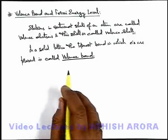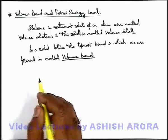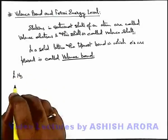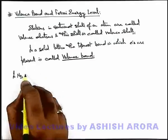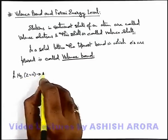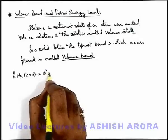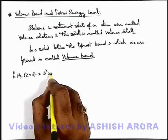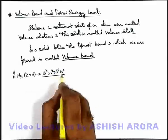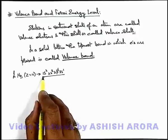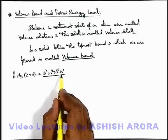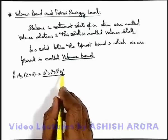Let's take the example of sodium to understand the valence band. Sodium has atomic number 11, and its electronic configuration is 1s², 2s², 2p⁶, and 3s¹. Here we can see that 1s, 2s, and 2p orbitals are completely filled, and this 3s orbital is half filled.